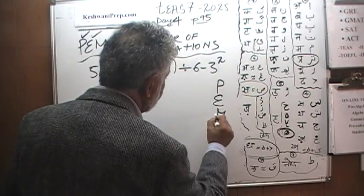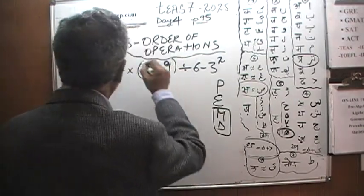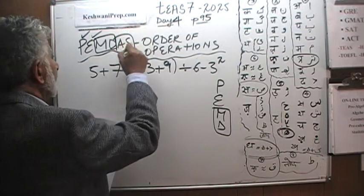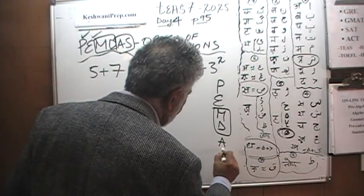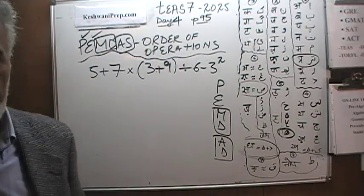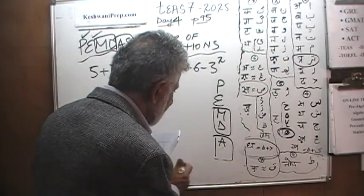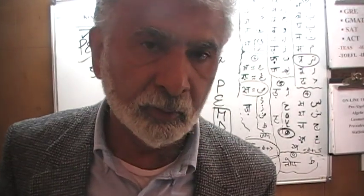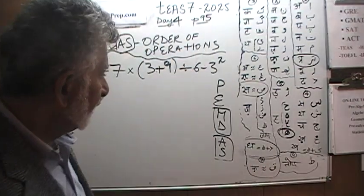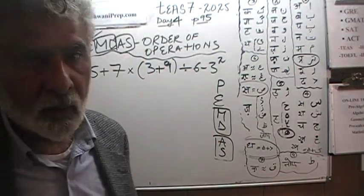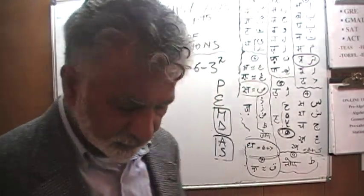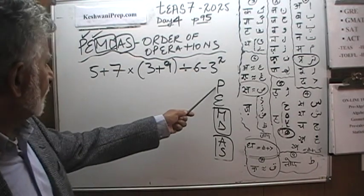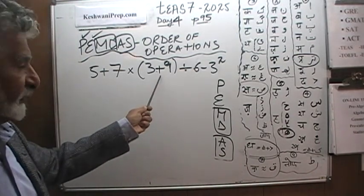They have the same priority. And finally, addition and subtraction. By same priority, what we mean is that if the subtraction happens to appear first, we do subtraction first. If the addition happens to appear first, we do that one first. Same thing with multiplication and division. They have the same priority. If you happen to see the division first, we do that first, moving from left to right. Let's begin, shall we? So, are there any parentheses? Oh, I see one right here. So that's the one we have to do first.